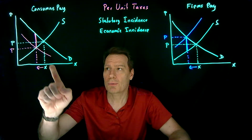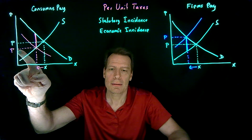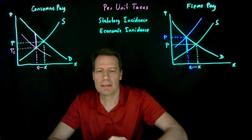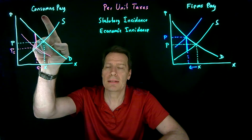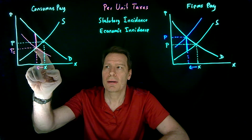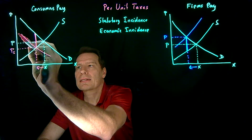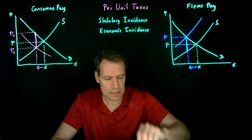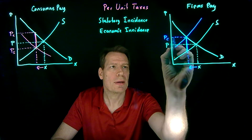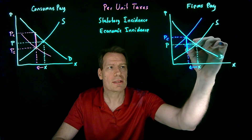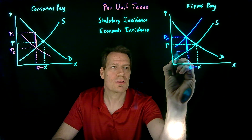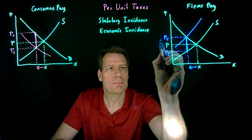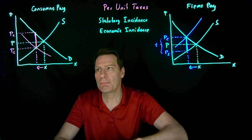Now we can look a little bit further at what's going on. This new equilibrium price is the price that the sellers — the firms — receive. But the consumers know they still have to pay the tax, so the price they actually pay, once we include the tax, is higher. On the other side, this is the price that the consumers pay to the firms, but now the firms know they still have to pay this per-unit tax, so the price that the firms actually get to keep is lower by the amount of the per-unit tax. So the difference between these prices is the per-unit tax in both cases.